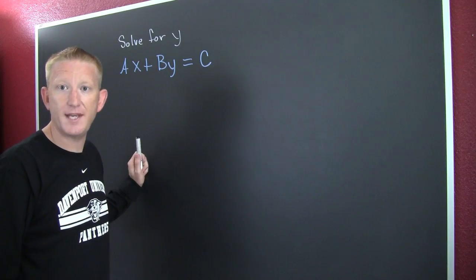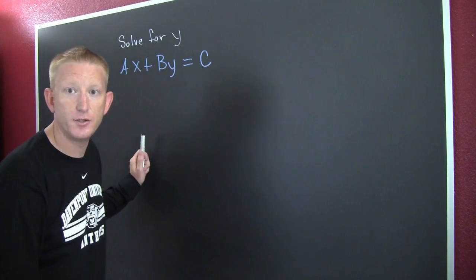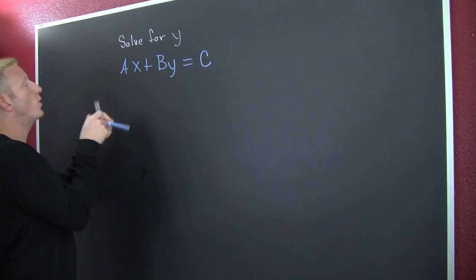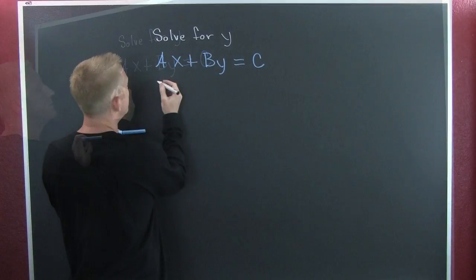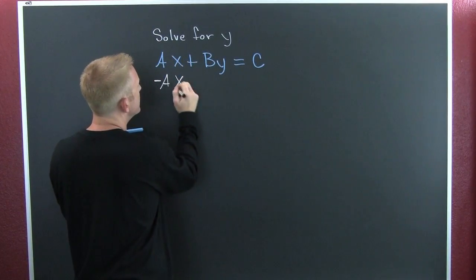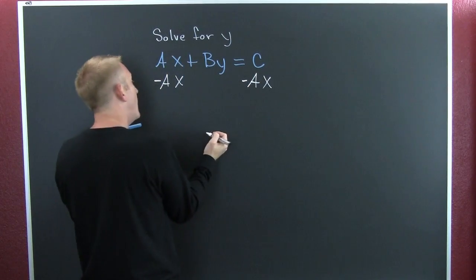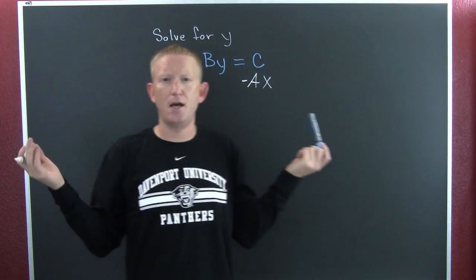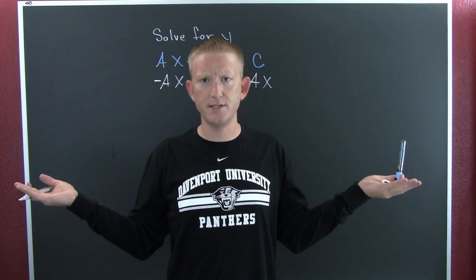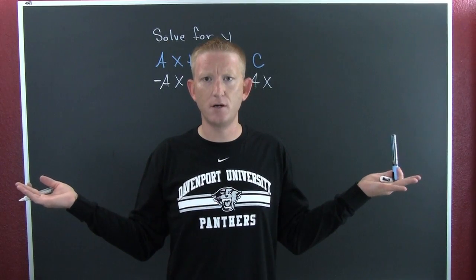What I want to do to one side I must also do to the other. I subtract off an ax and I subtract off an ax. Yes, why? Because it's the addition rule of equality. What you do on one side you must also do to the other.